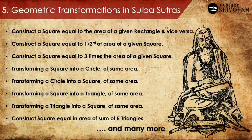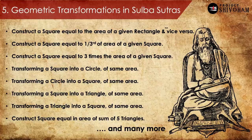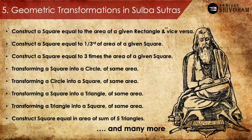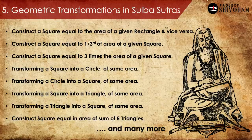Coming to the fifth and last, and most important, subject of Sulbhasutras: geometric transformations. How do you transform one shape into another shape while restricting to the same area? For example: transform a square into a rectangle of the exact same area, or vice versa. Or construct a square and then construct another square three times the area. Or one-third the area. There are many such transformations — circle to square, square to circle, square to rectangle, triangle to square, and so on.